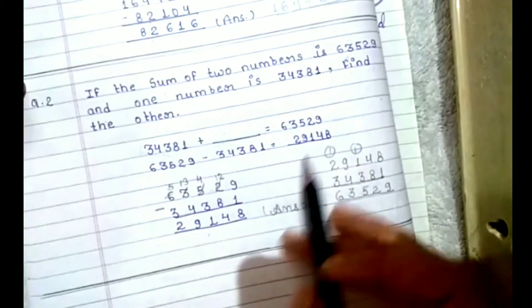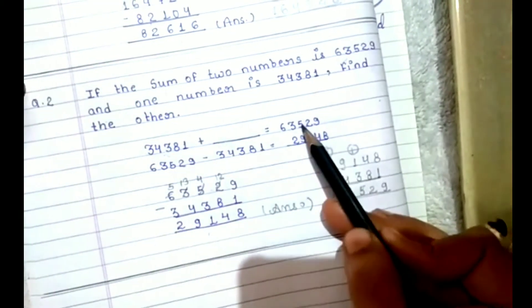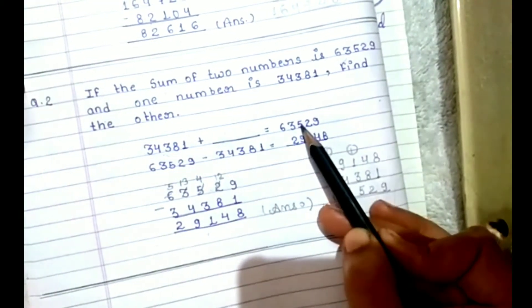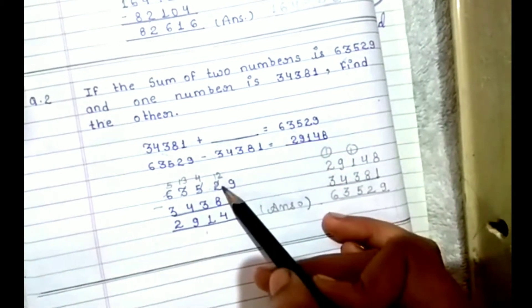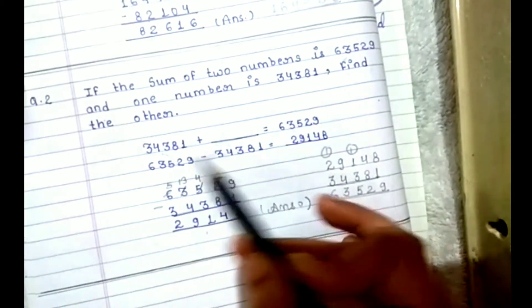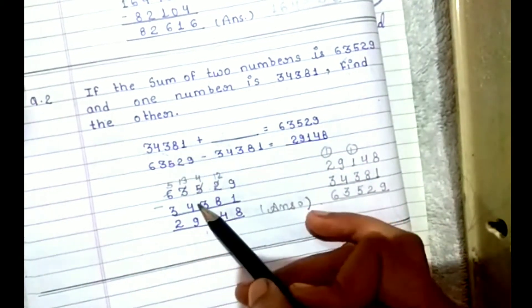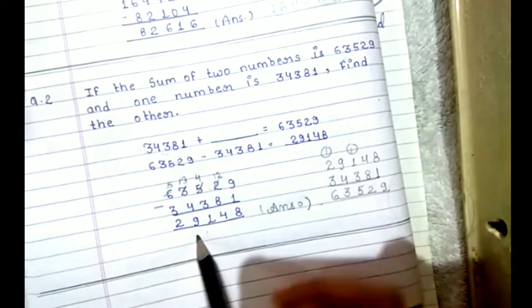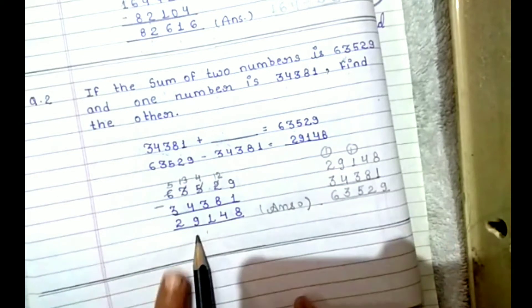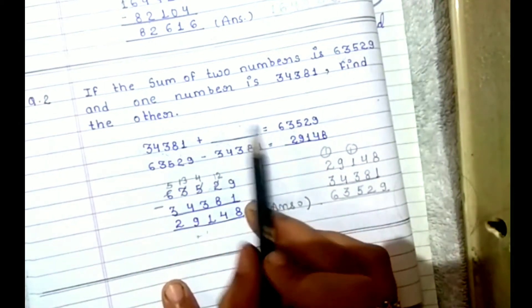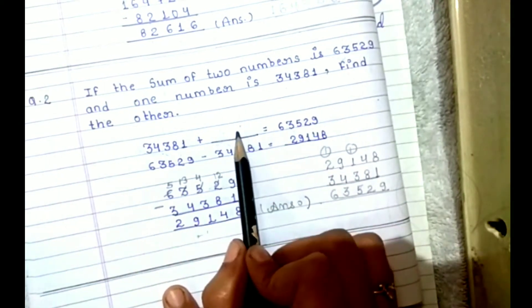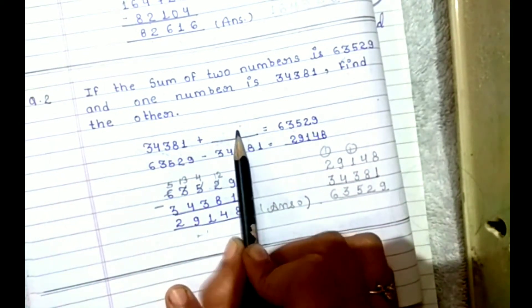तो अपन फिर से वही method use करेंगे - इसमें से इसको minus कर देंगे। तो अपनने again ये वाला number write किया, उसमें इस number को minus किया, और जो result आया वो अपना answer हो जाएगा, जो अपना missing addend है।